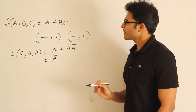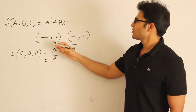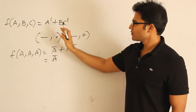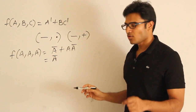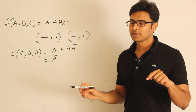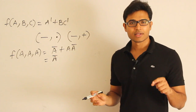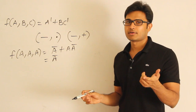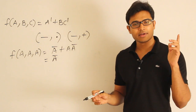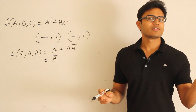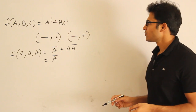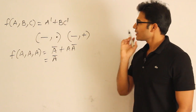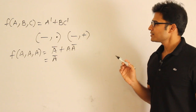It is very easy to realize complementation using this given function. Now if this function has to be functionally complete, you should either try to derive AND or OR. If you derive one of them, then the other can be derived anyway. So maybe if you observe it, I think deriving OR (plus) is easy.